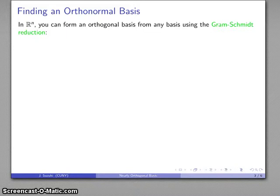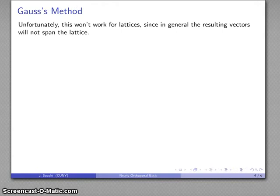If I'm dealing in R^n, then given any set of basis vectors, I can use the Gram-Schmidt reduction to produce an exactly orthogonal basis. Unfortunately, this doesn't do a lot of good because I can't do this for lattice vectors, since in general the resulting vectors won't span the lattice because they're not going to have integer components.